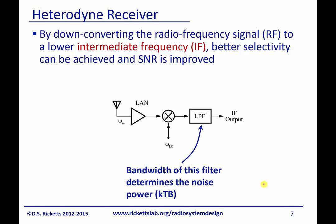The idea is that we take our incoming signal and down-convert it with an LO that is not equal to our input frequency. This places our input signal at a lower intermediate frequency, allowing us to process it more easily. The bandwidth of the filter after the mixer determines our noise. KTB is the power level of white noise — the total noise power is K times T times bandwidth, which gives us σ², our noise power. More on that in future lectures.